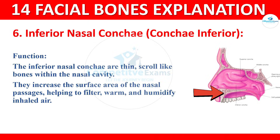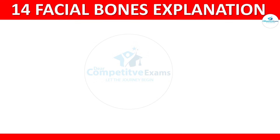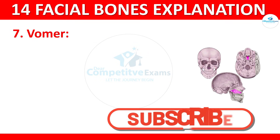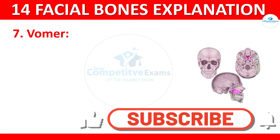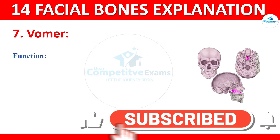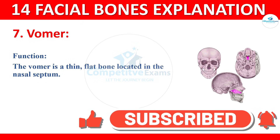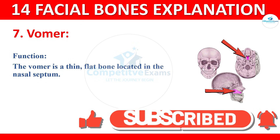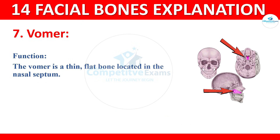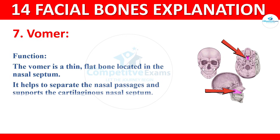The seventh type of bone is vomer. The vomer is a thin, flat bone located in the nasal septum. It helps to separate the nasal passages and supports the cartilaginous nasal septum.